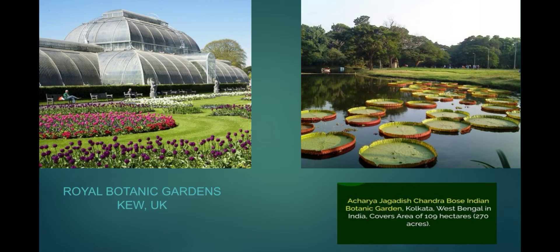In the second picture you see a botanical garden from India, Kolkata, which is situated in West Bengal in India. It covers an area of 109 hectares and about 270 acres. Its name is Acharya Jagadish Chandra Bose Indian Botanic Garden.